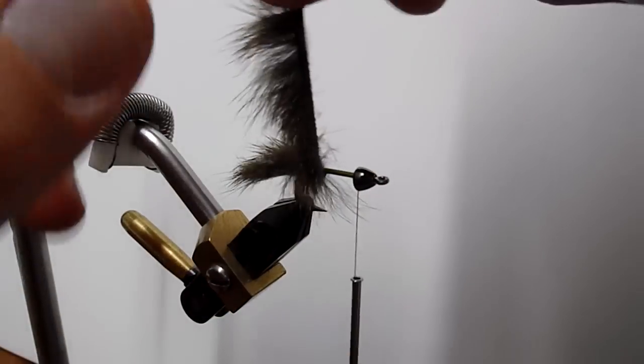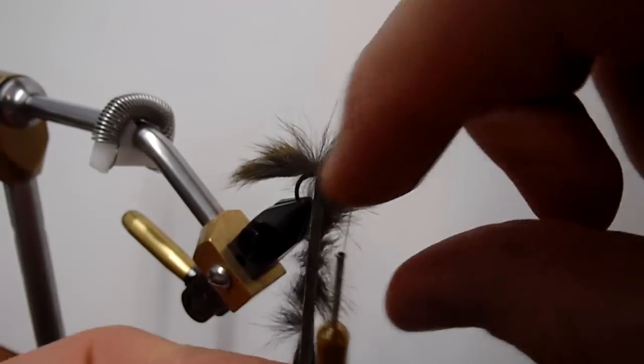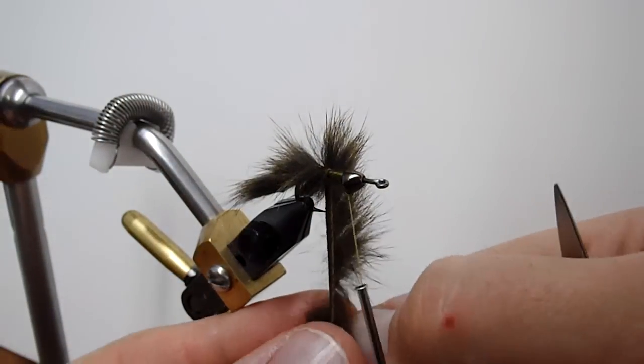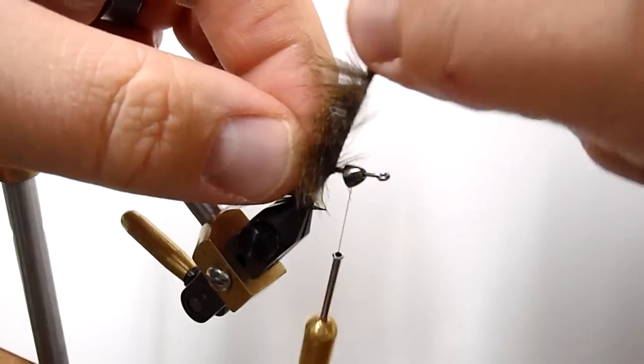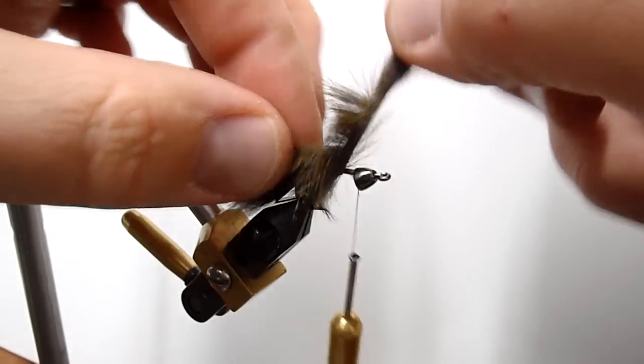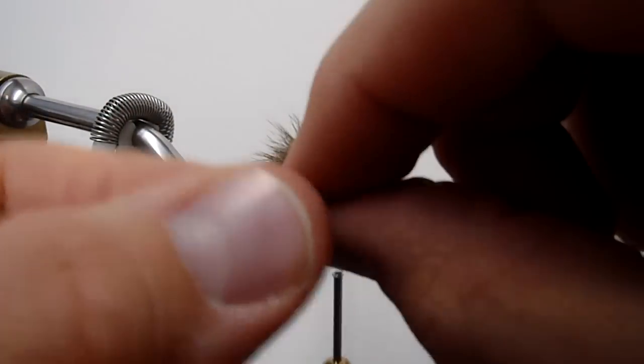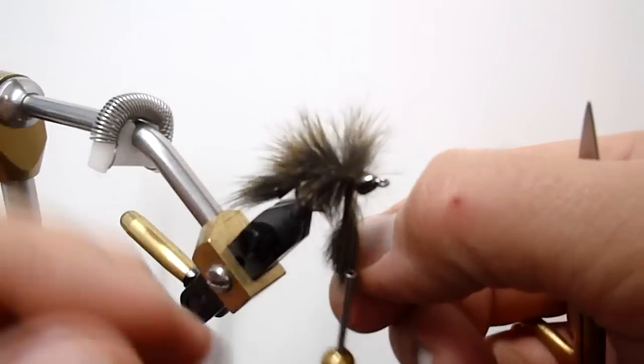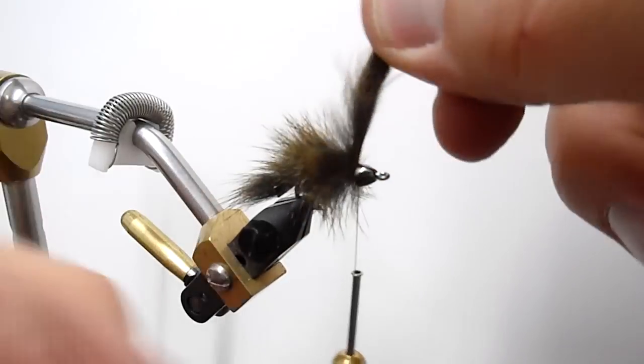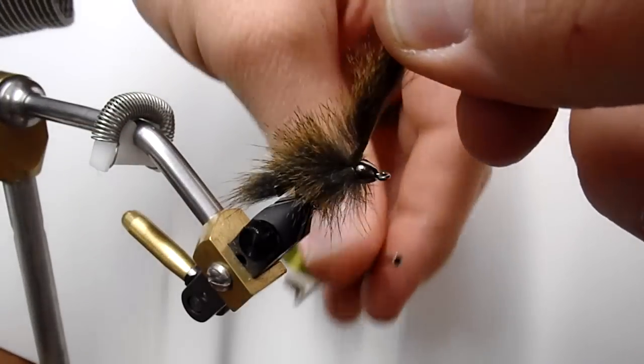Now we're just going to take this and wrap it along the hook, and then kind of push the material back so that it falls back on itself so that it's not all getting crammed on top of itself. We're just making these wraps one right next to the other. And then as we get up to where we're almost right behind the cone, we're going to back that off one wrap.